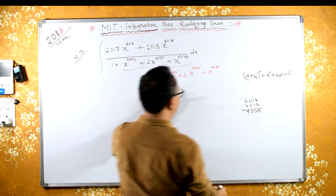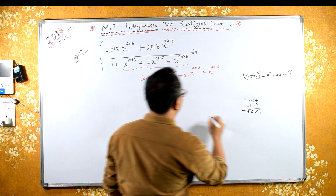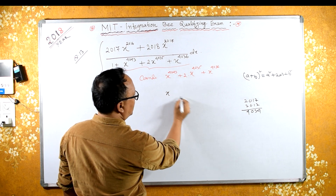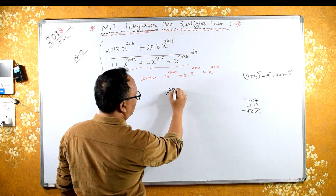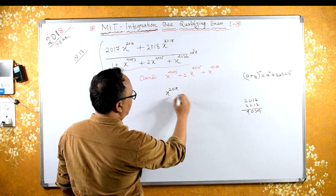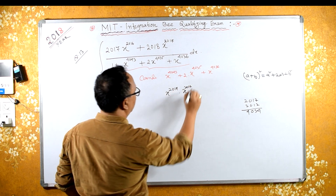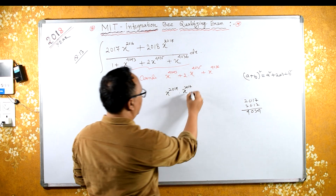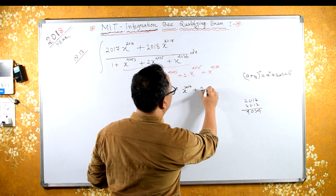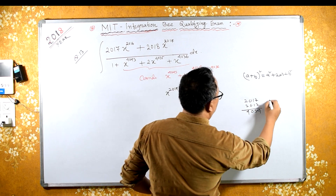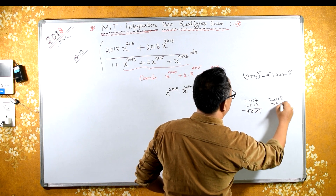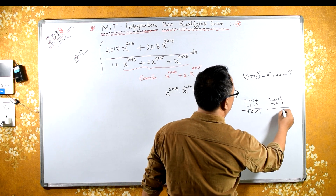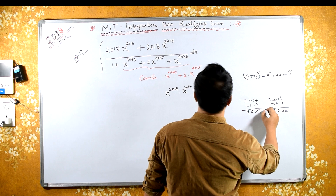Remember, in exponentials, this can be written as x raised to 2017 into x raised to 2017 — because if the bases are the same, you can add the indices. Plus twice: what about 2018 plus 2018 equals 4036?